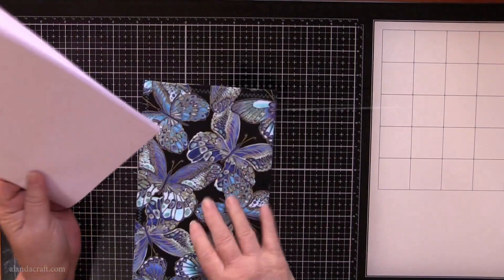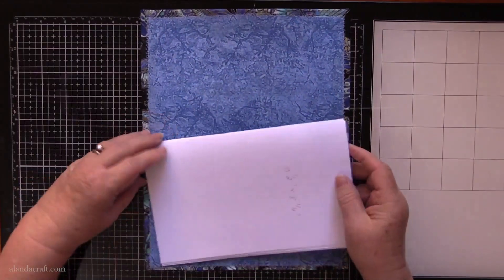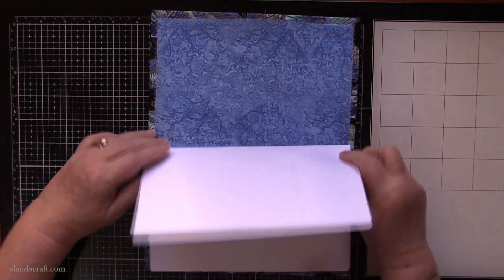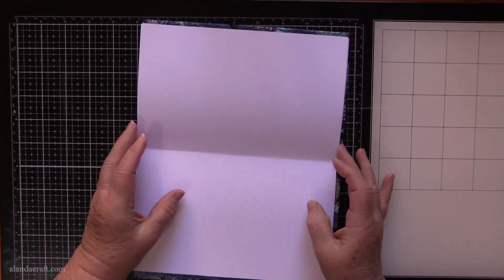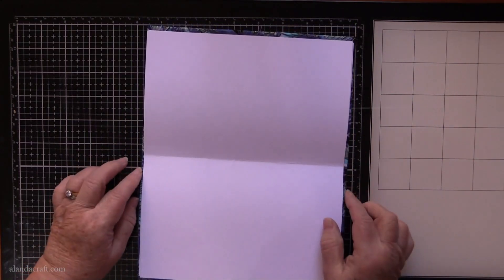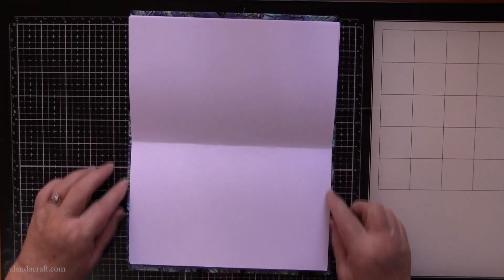So I'm just going to open our journal cover and lay our pages in here. We want to line them up so that they don't come right to the edge, all right? So leave a little bit of a gap, just lay them on there.